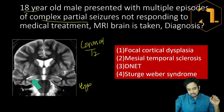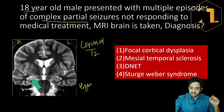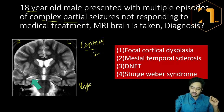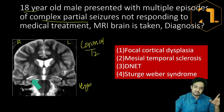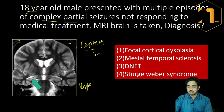What we are seeing here is T2 hyperintensity in the region of the hippocampus. If you compare the right hippocampus with the left, the left hippocampus is normal — relatively gray in appearance — but the right is hyperintense, showing brightness. There is also volume loss on the right side, and because of this volume loss, there is enlargement of the choroidal fissure. So there is increased signal intensity within the hippocampus, volume loss, and dilatation of the choroidal fissure. This is a case of mesial temporal sclerosis.